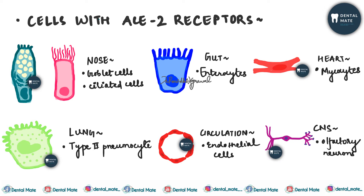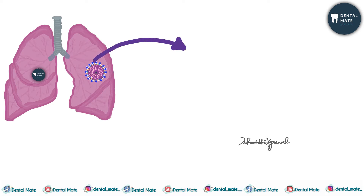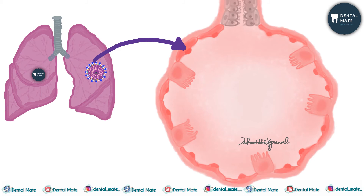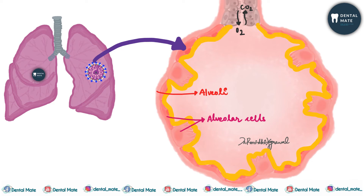What does the virus do after entering the human body? Consider the lungs, the most commonly affected organ. The lungs contain sacs called alveoli, and the virus triggers a response within them. Alveolar cells produce surfactants which coat the alveoli and keep them open, thereby allowing gaseous exchange — essentially preventing the collapse of alveoli. We breathe in oxygen and breathe out carbon dioxide through this process.